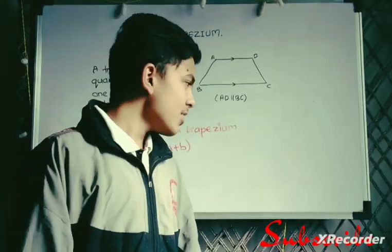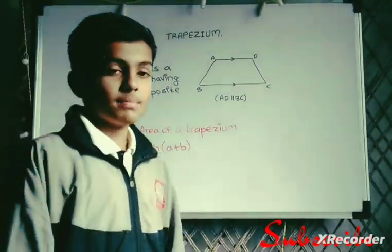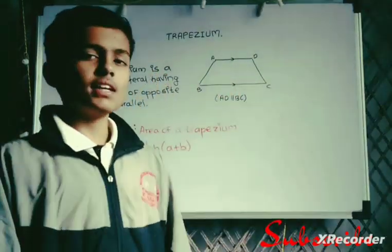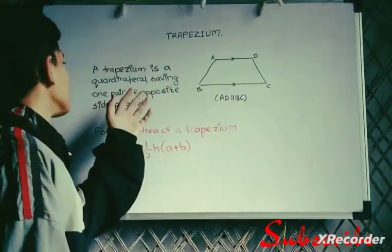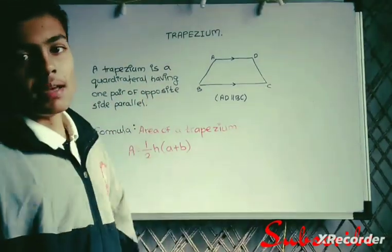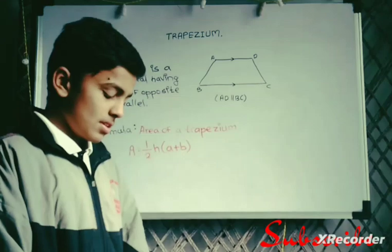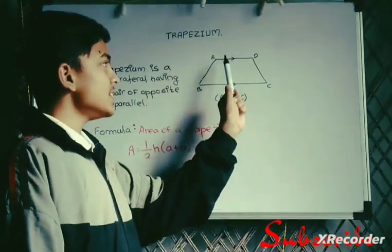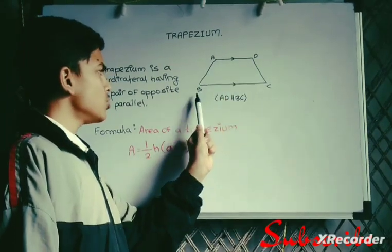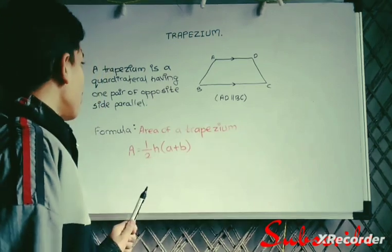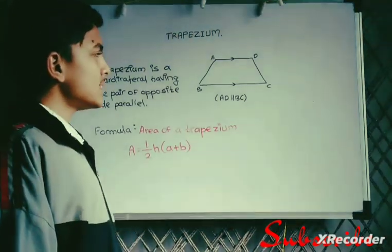In today's video we are going to learn about trapezium. Starting with the basics, trapezium is a quadrilateral having one pair of opposite sides parallel. It is telling that we have here a figure in which the opposite side, you can see that AD is opposite to BC and they are parallel. That's what makes the quadrilateral a trapezium.